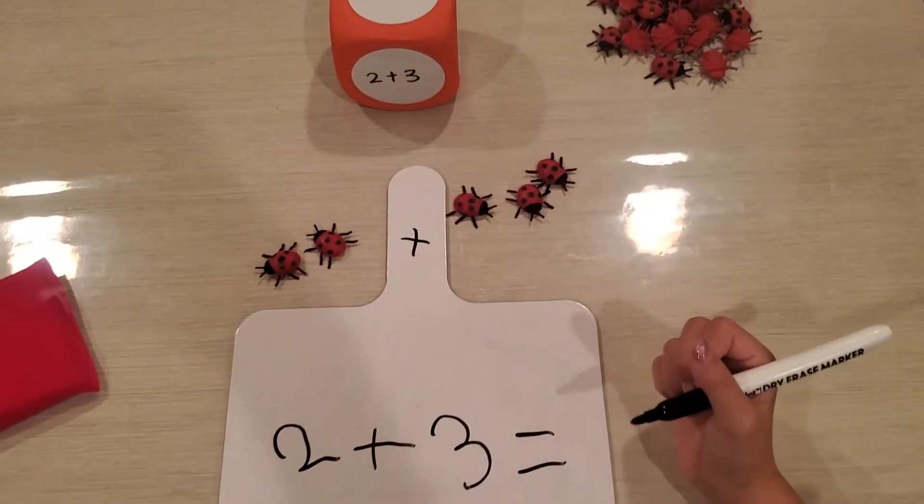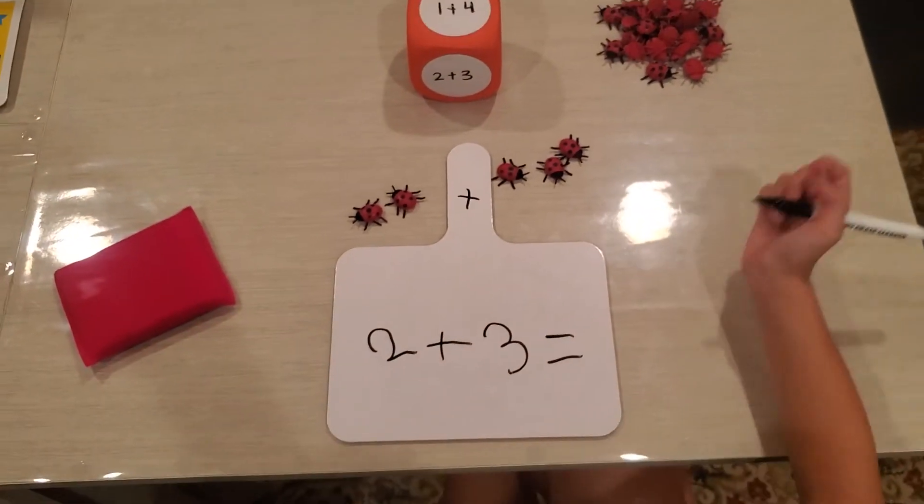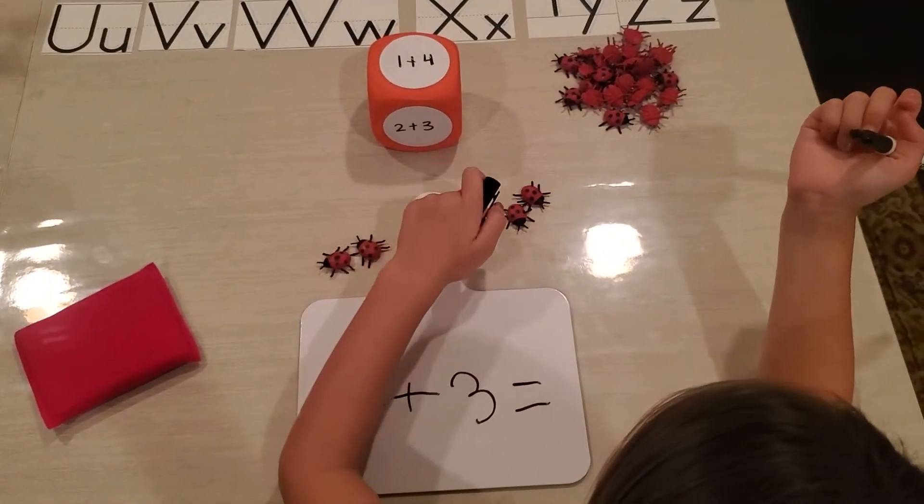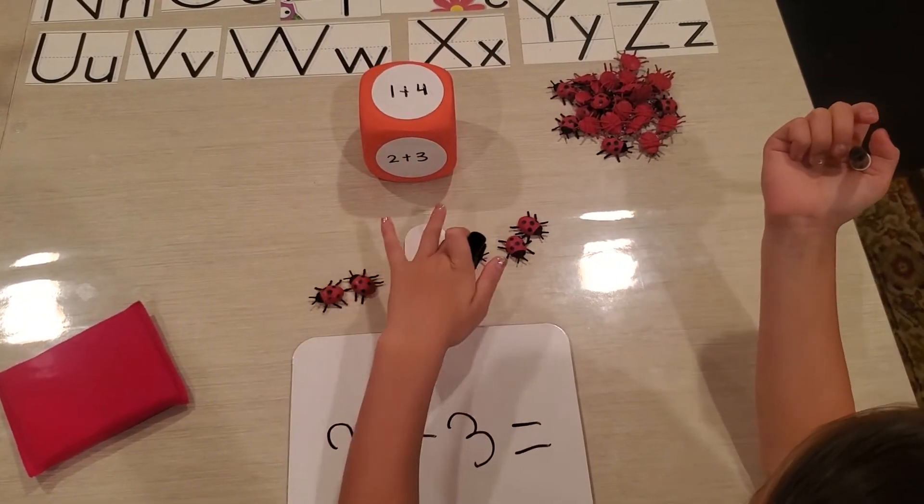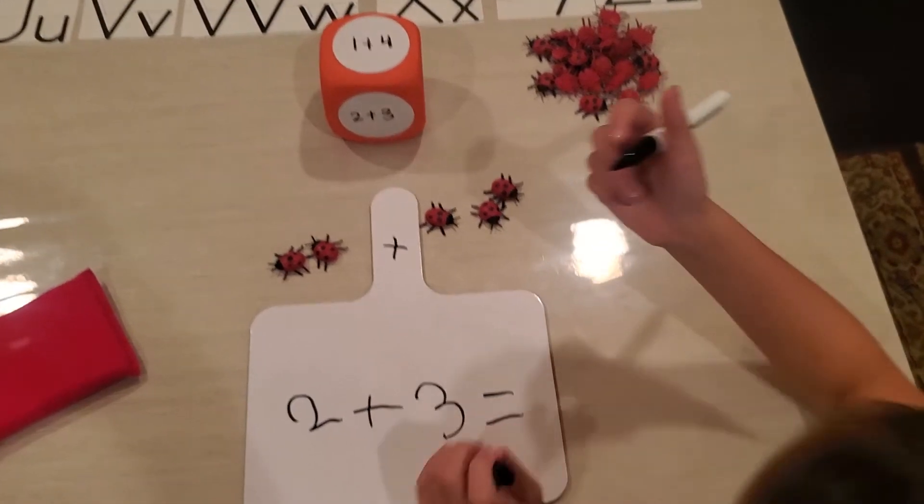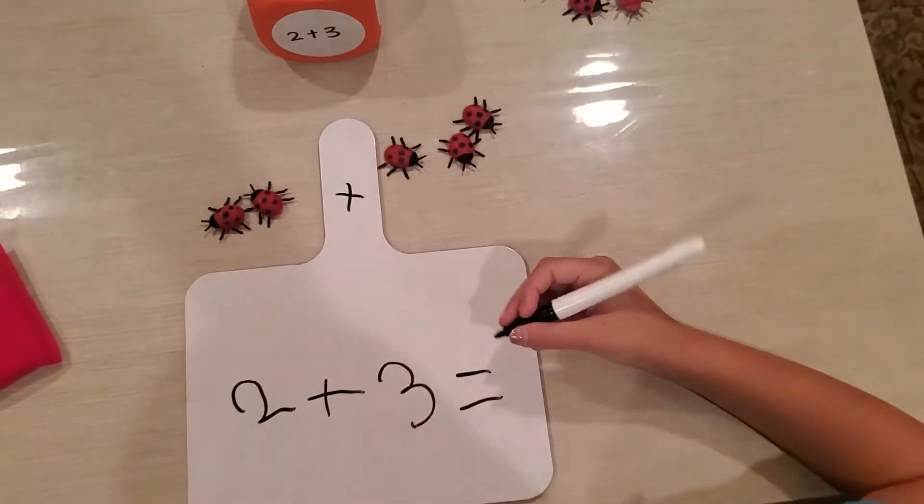Okay, now let's count all the ladybugs all together. One, two, three, four, five. All right, so two plus three equals? Five.